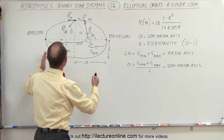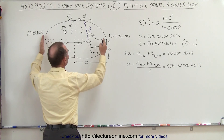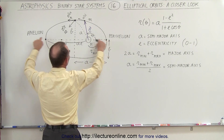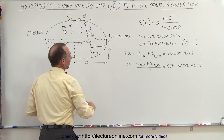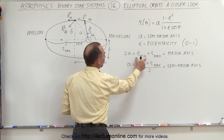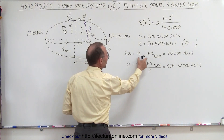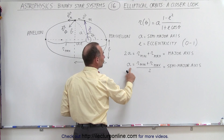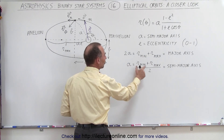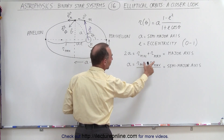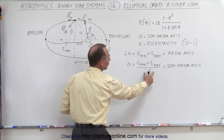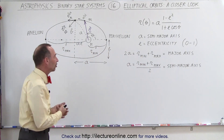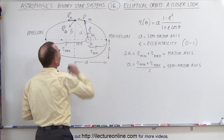The distance from the aphelion to the perihelion is equal to 2a, which is what we call the major axis. That's equal to the sum of the minimum radius and the maximum radius combined. If we divide that by 2, we have a, which equals the sum of the minimum and maximum radii divided by 2 — known as the semi-major axis, which is also the average distance between the planet and the sun.